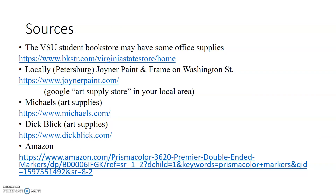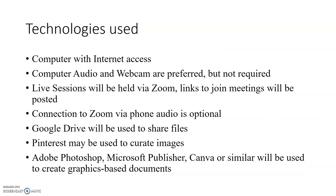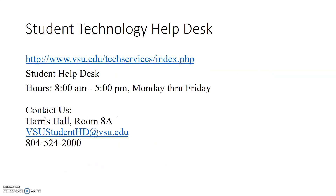For supply sources: the VCU Student Bookstore may have some office supplies. Locally in Petersburg, Joiner Paint and Frame on Washington Street has art supplies. You can also Google art supply stores in your local area. Michaels has art supplies, Dick Blick is an online resource, and Amazon has great supplies for very inexpensive prices. For technology, you'll need a computer with internet access. Computer audio and webcam are preferred but not required. Live sessions will be held via Zoom and links will be posted — you can also connect via phone audio. Google Drive will be used to share files, Pinterest may be used to curate images, and Adobe Photoshop, Microsoft Publisher, Canva, or similar software will be used to create graphics-based documents. The Student Technology Help Desk is available if you have any technological issues.